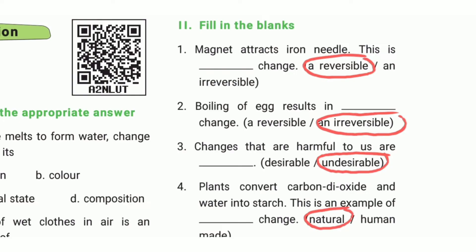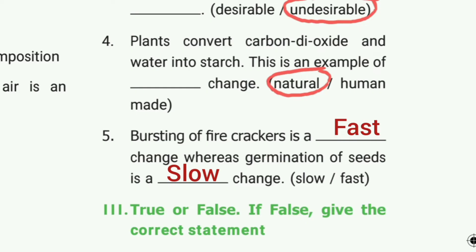Third question: changes that are harmful to us are undesirable. Fifth one: plants convert carbon dioxide and water into starch - this is an example of natural change. Bursting of firecrackers is a fast change, whereas germination of seed is a slow change.